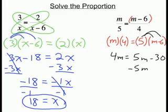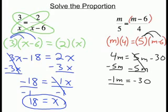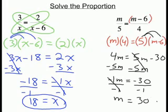Now we must move all the variables to one side. We will move the m's to the left by subtracting 5m from both sides. 4 minus 5 is negative 1m equals negative 30. Divide both sides by negative 1, and m equals positive 30.